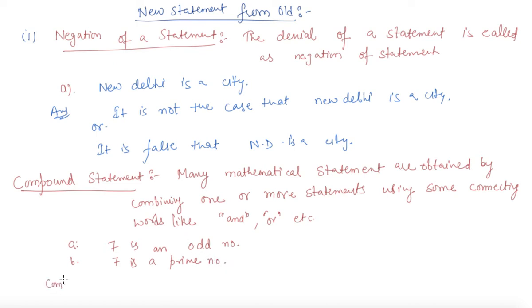To write the compound statement of both these, the compound will be: 7 is both odd and prime number. This is the connector from which we compound the statement.